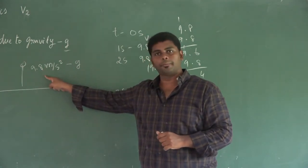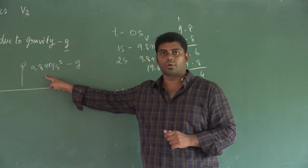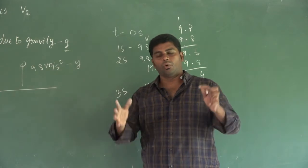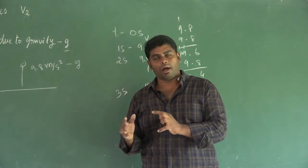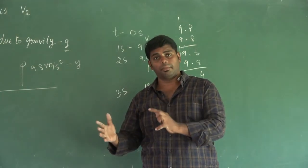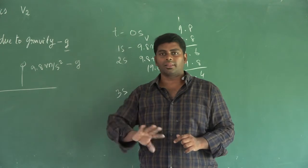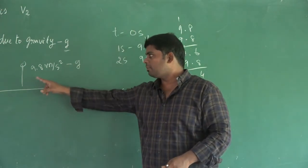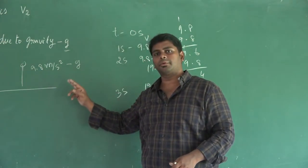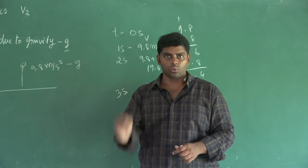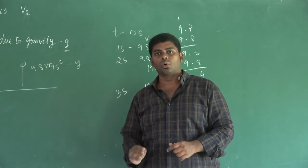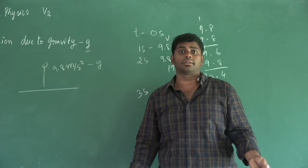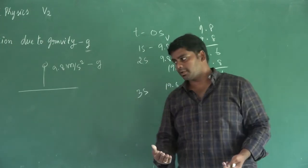Congratulations! This is the acceleration due to gravity. The mass of the object does not matter — it's not different for different masses. It's 9.8 meters per second square; that's the acceleration. It's the same rate at which all objects fall.